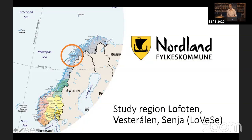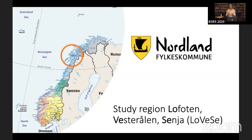Now let's talk about the region. LoVeSa stands for Lofoten, Vesterålen, and Senja — the northern archipelago area of the Nordland regional county. Fishing has been going on here for over a thousand years, so there is very much a cultural heritage that is intertwined in the cultural environment. The people use the environment to form their heritage, and it's a mecca for artists and tourists — in my opinion, the most beautiful part of Norway.